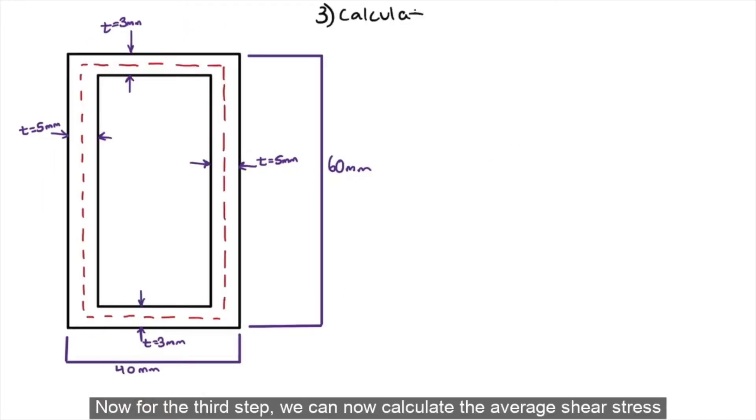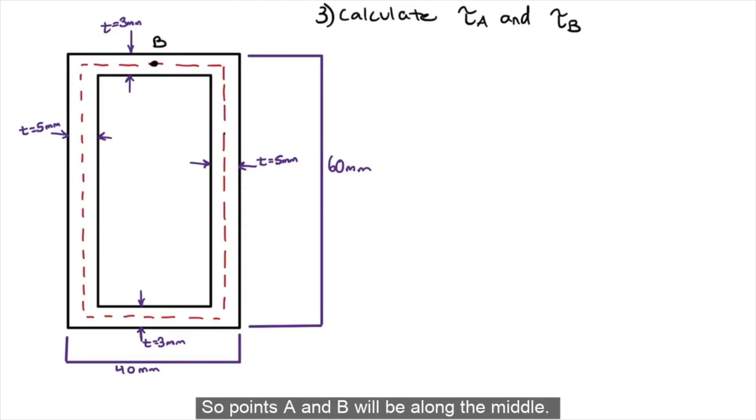Now, for the third step, we can now calculate the average shear stress at points A and B. Note that we're taking the shear stress from the middle and not the sides. So, points A and B will be along the middle. Let's start calculating the average shear stress at point A.